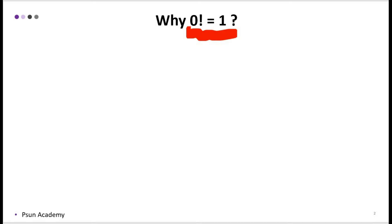So first we will see what is the formula for factorial. Any number factorial is equal to n into n minus 1 into n minus 2 into n minus 3 so on till it reaches to 1.